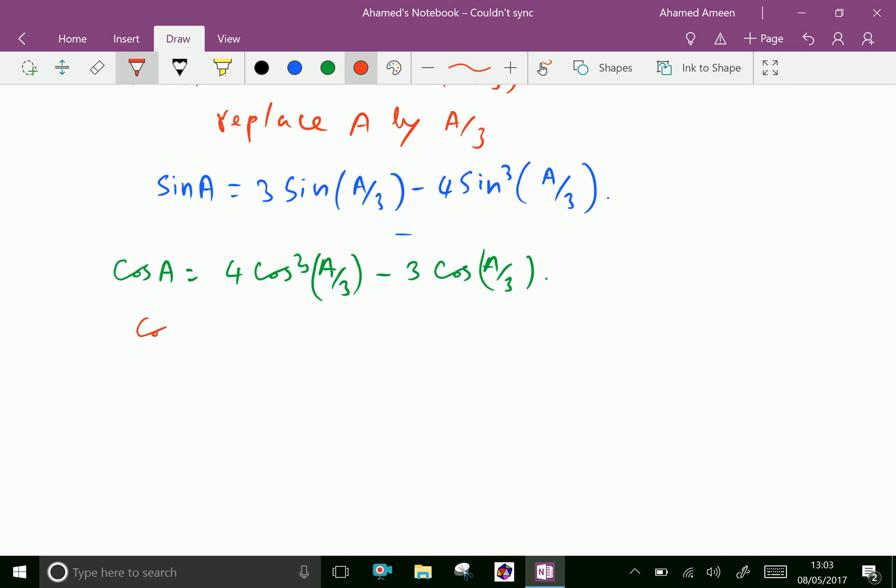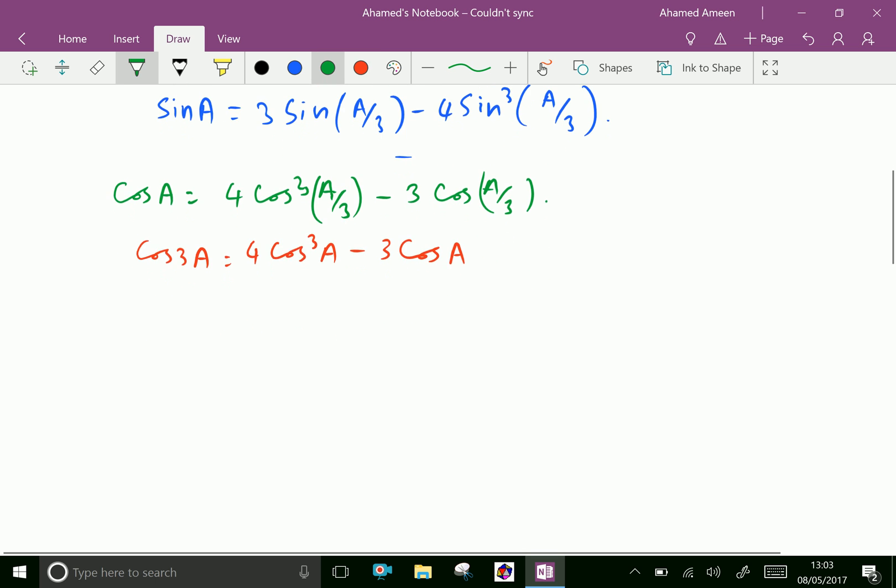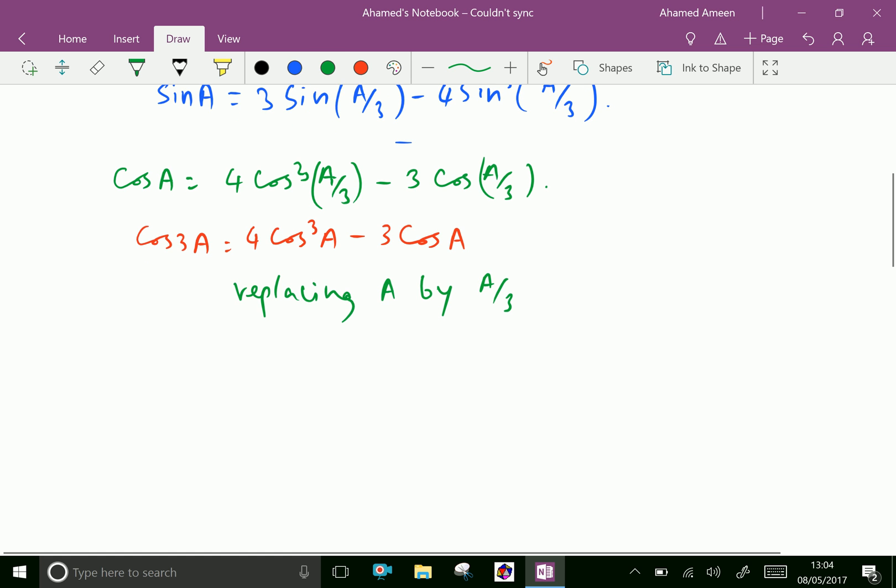we know that cos 3A equals 4 cos³ A minus 3 cos A. Replacing A by A/3, we get, instead of cos 3A, we can write cos A equals 4 cos³(A/3) minus 3 cos(A/3).